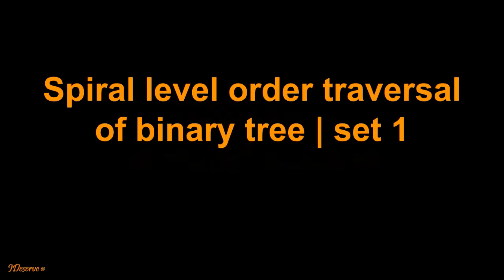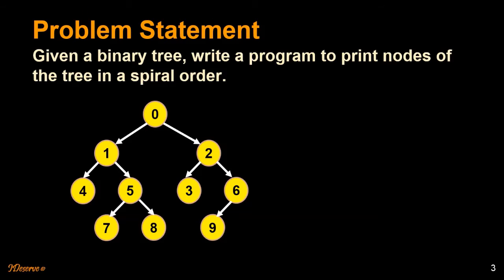Hi everyone, this is Virendra from iDeserve. Today I'm going to talk about spiral level order traversal of a binary tree. We are traveling level-wise in the binary tree but also doing it spirally. There are two types of problems related to this, and I'm going to talk about one of them today. The problem statement is: given a binary tree, we need to write a program to print nodes of the tree in a spiral order.